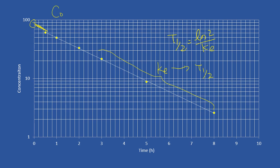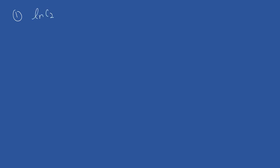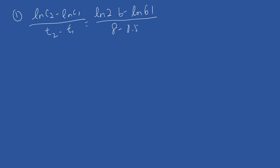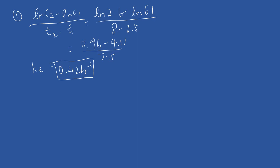Now let's move on to the calculation steps. For question number one, we need to calculate the gradient using the equation: (ln C2 minus ln C1) divided by (t2 minus t1). Using the example: (ln 2.6 minus ln 61) over (8 minus 0.5), the value obtained is (0.96 minus 4.11) divided by 7.5. The answer for ke should be 0.42.